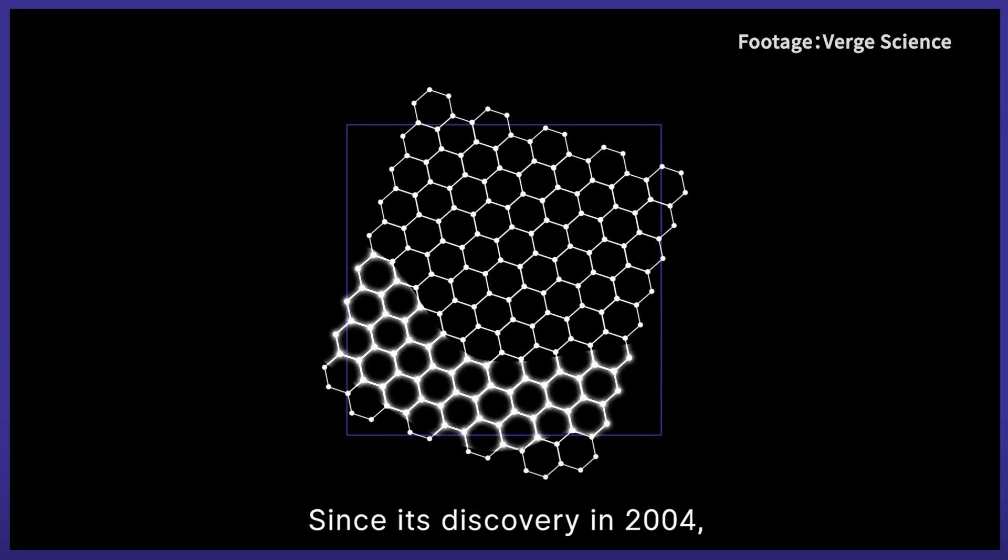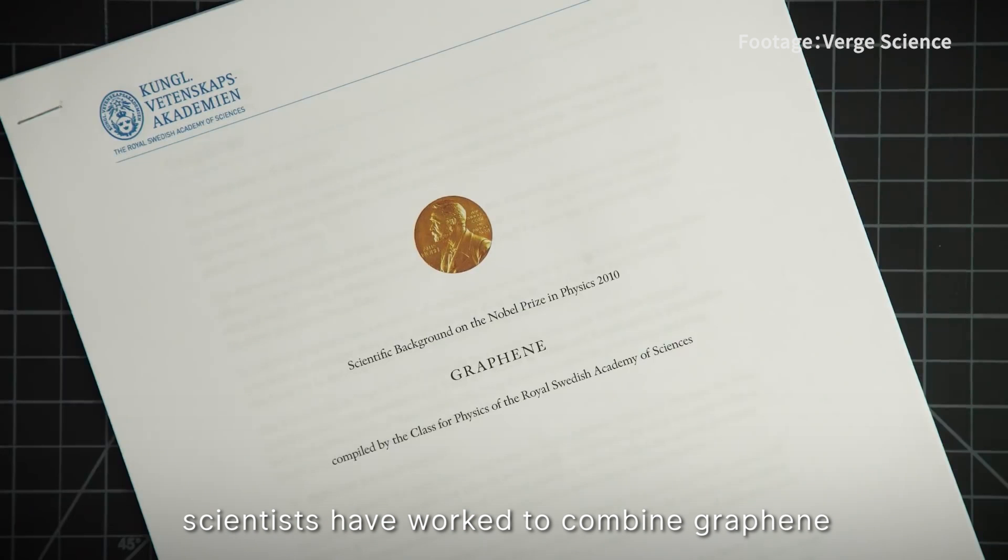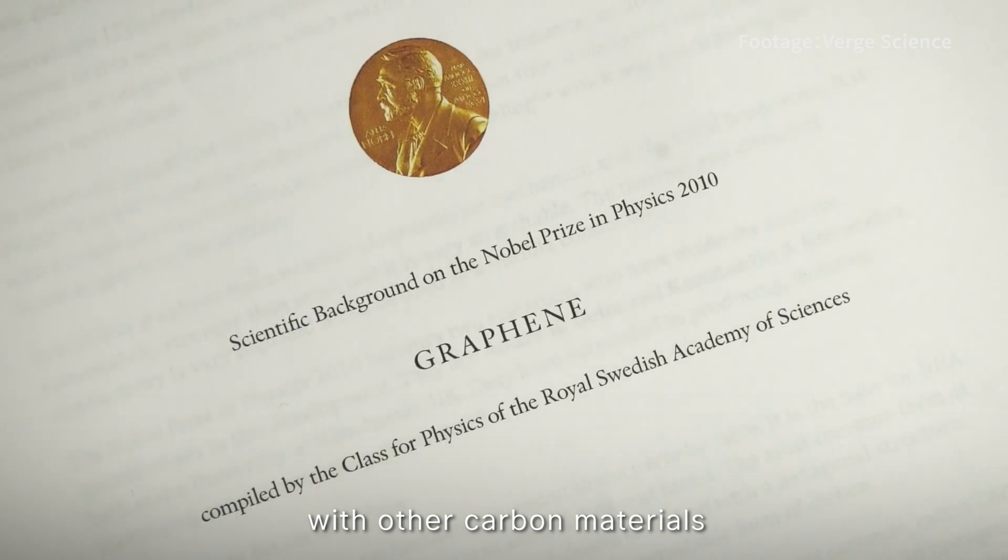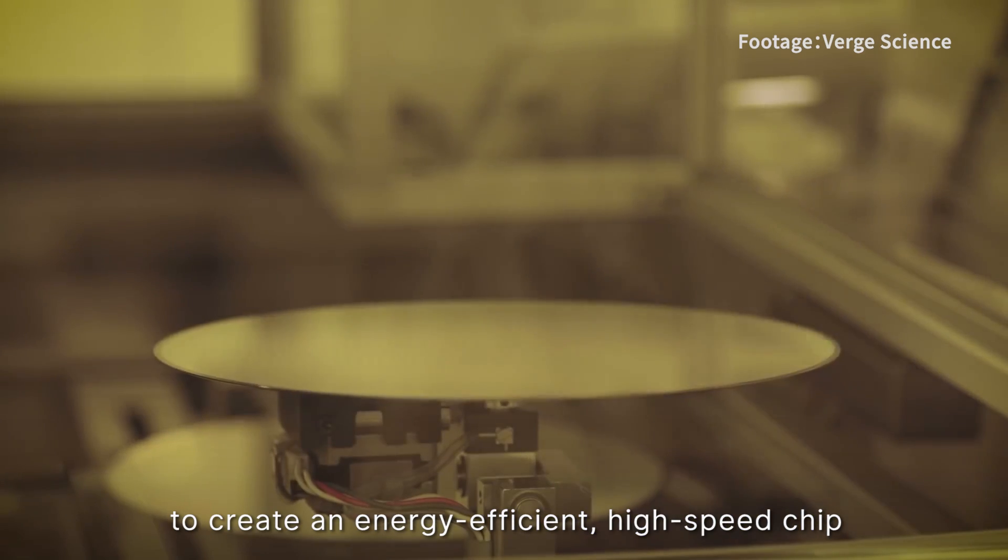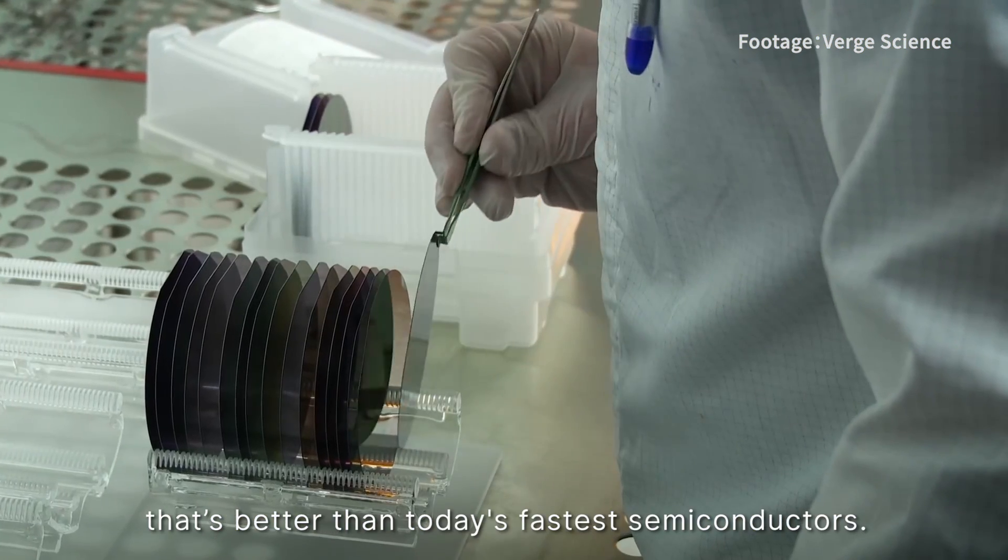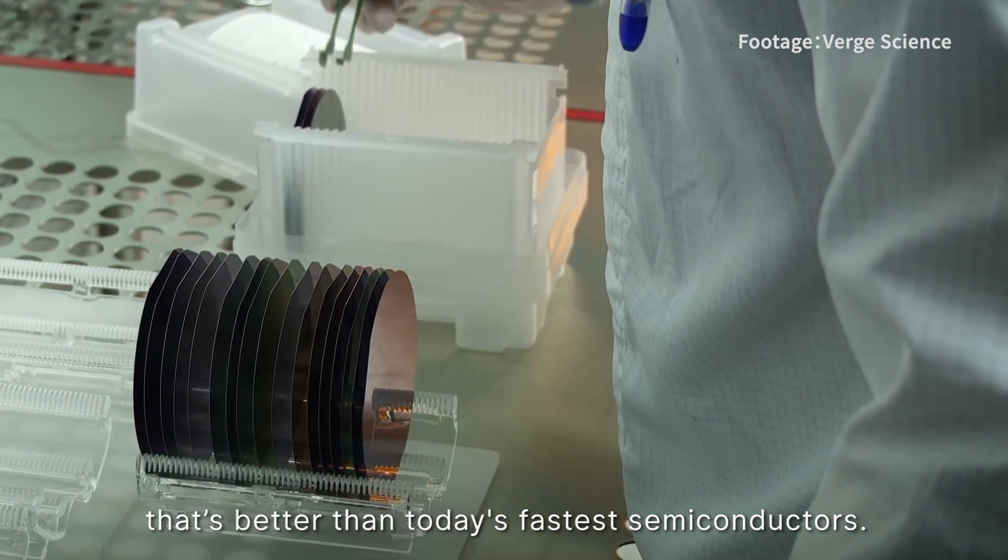Since its discovery in 2004, scientists have worked to combine graphene with other carbon materials to create an energy-efficient, high-speed chip that is better than today's fastest semiconductors.